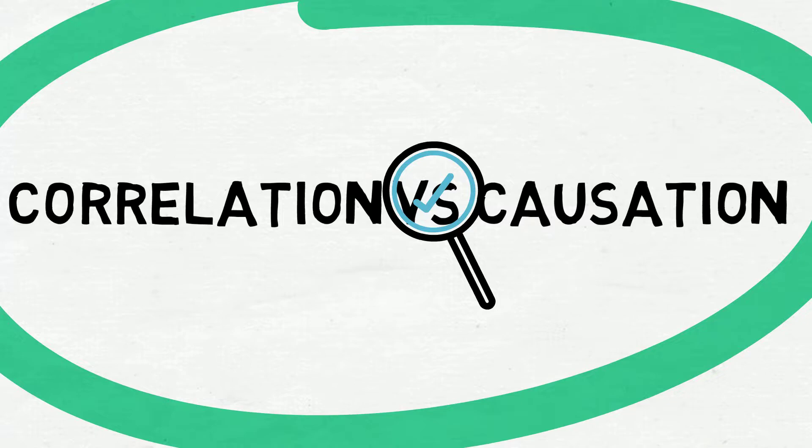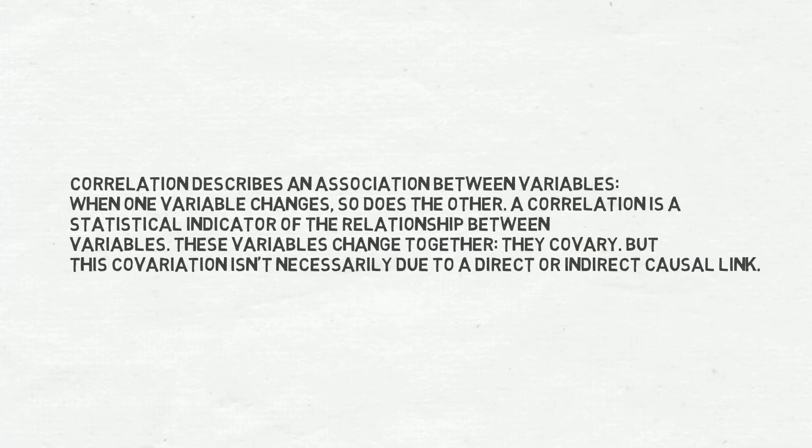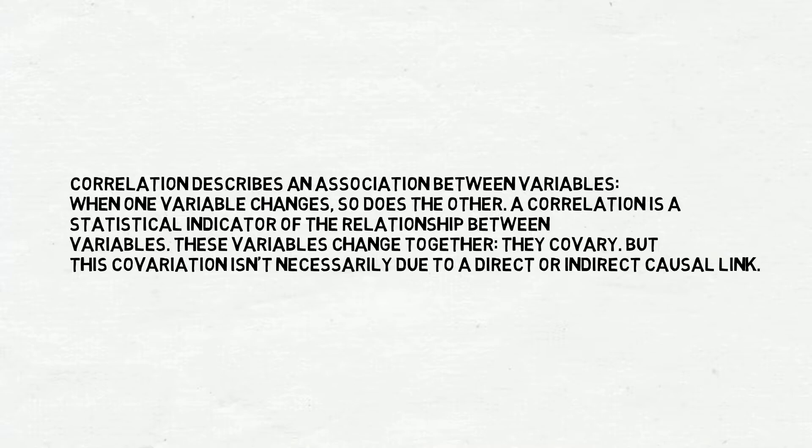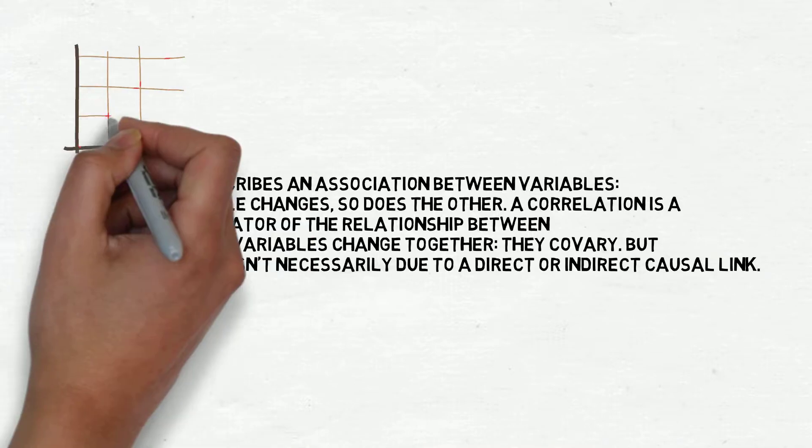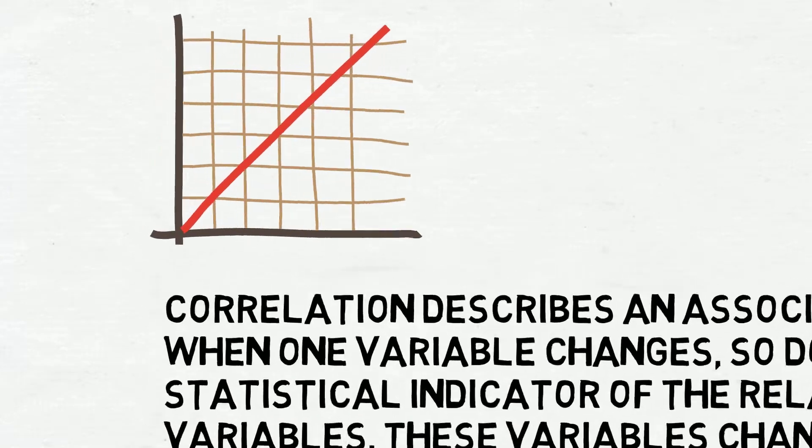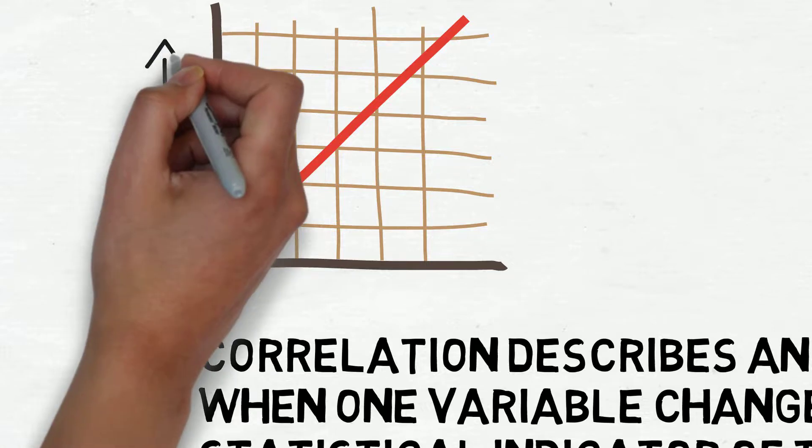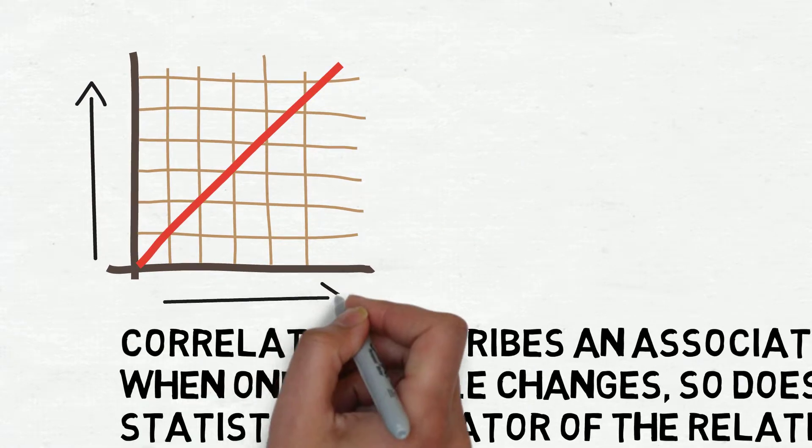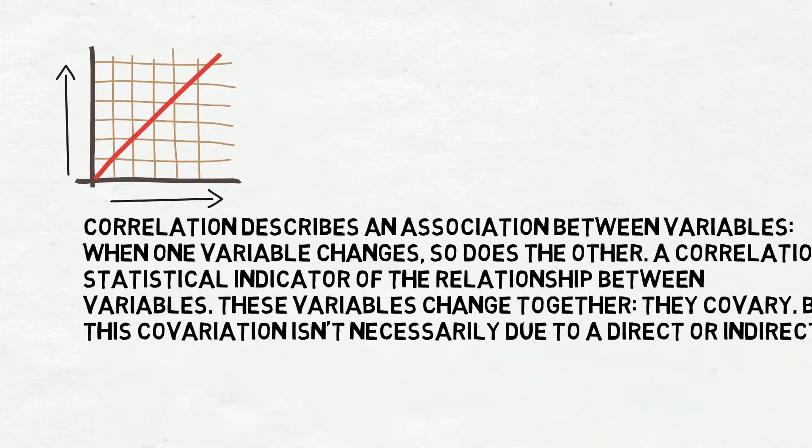Correlation describes an association between variables. When one variable changes, so does the other. A correlation is a statistical indicator of the relationship between variables. These variables change together; they covary, but this covariation isn't necessarily due to...